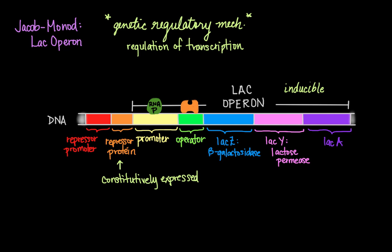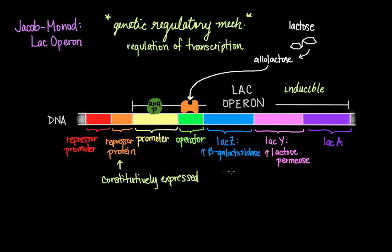When glucose is not readily available and lactose is present as an alternate energy source, things start to change. Lactose passively enters the cell at a slow rate, and a metabolite of lactose called allolactose binds to the repressor protein. This alters the conformation — the shape — of the repressor, causing it to loosen and fall off the operator. With the repressor gone, RNA polymerase is free to transcribe all three genes, producing higher levels of lactose permease and beta-galactosidase. Permease allows more lactose into the cell, and beta-galactosidase breaks it down into galactose and glucose for the cell's metabolic needs.